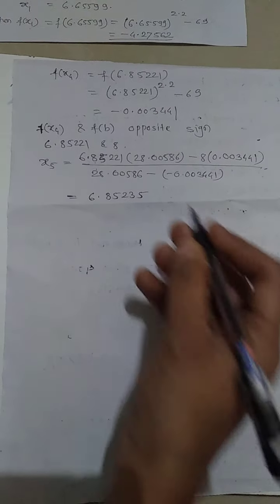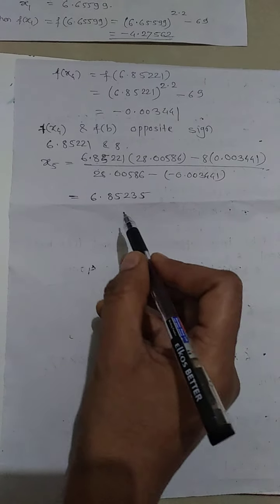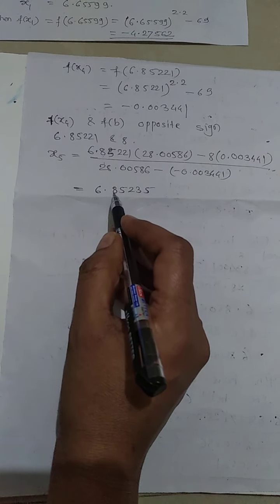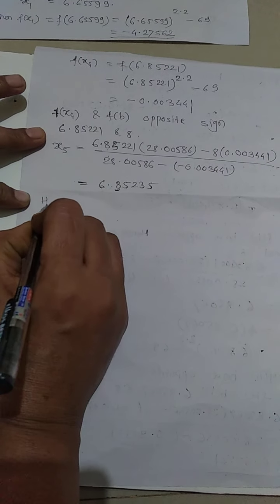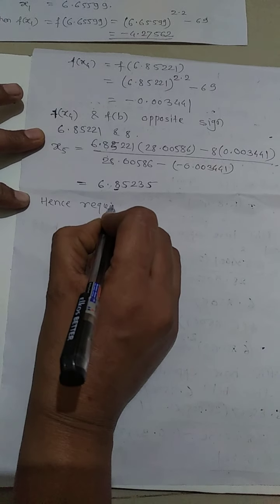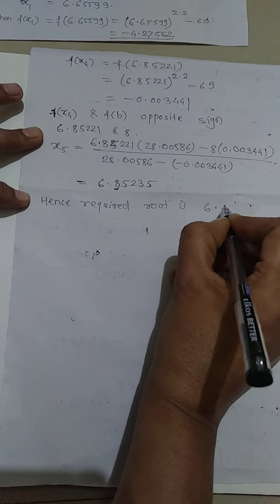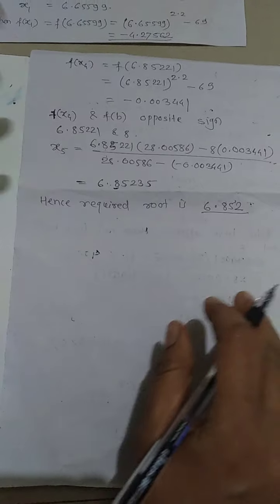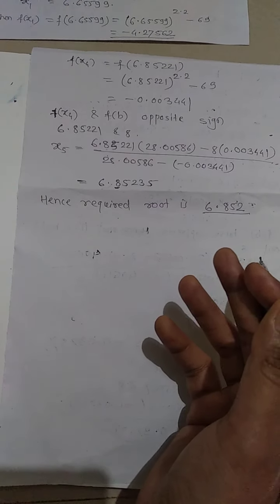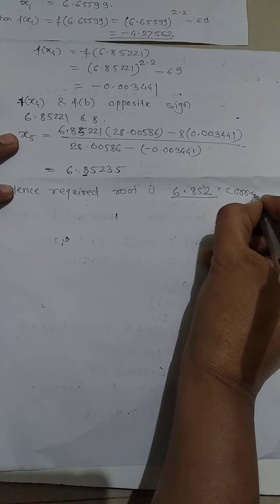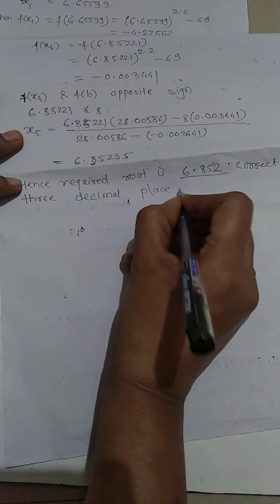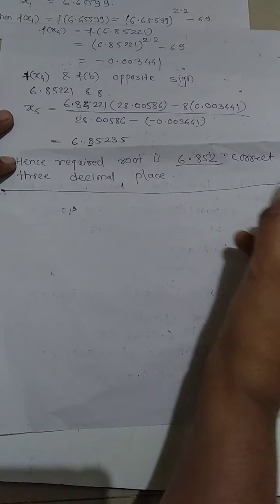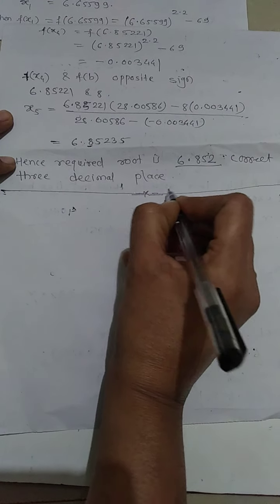Since x4 and x5 have the same value after the decimal point up to three digits, the root is correct to three decimal places. Hence, the root correct to three decimal places is 6.852.